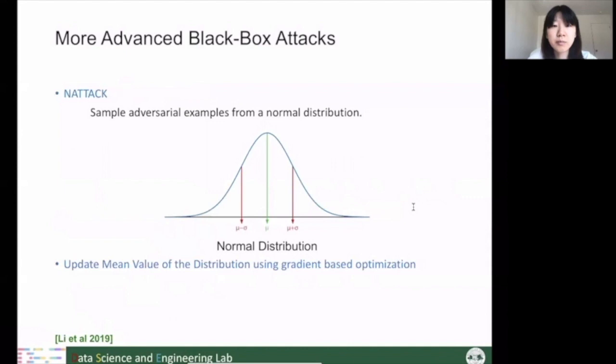Another strong black-box attack is N-Attack. Instead of finding one adversarial example, it tries to find a distribution around a benign sample such that the adversarial loss is high. A sample drawn from this distribution is likely to be adversarial. The attacker gets this distribution by updating the mean value using gradient-based optimization — drawing samples, then updating the mean using the gradient of the loss to obtain a probability density function of adversarial examples.